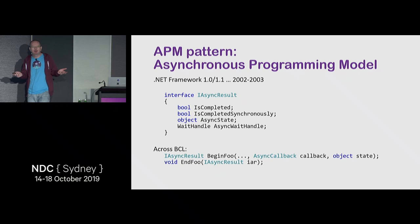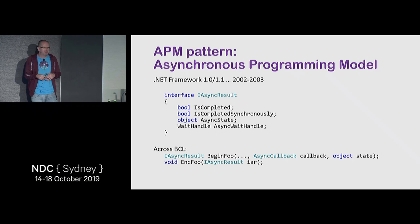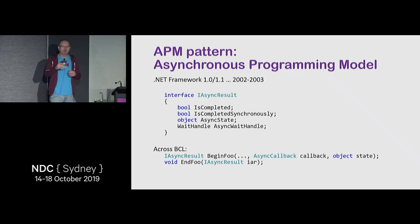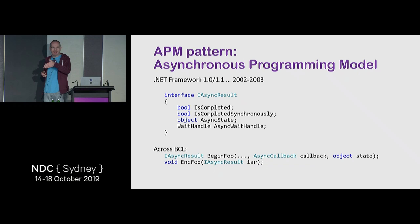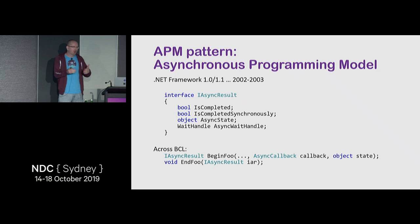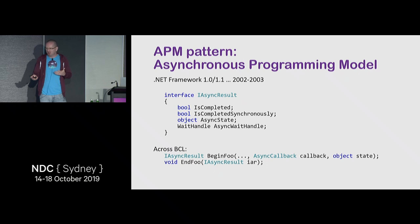The typical function you'd see in BCL was something like BeginFoo, which takes a callback and state, and EndFoo, which takes the IAsyncResult that BeginFoo returned. There were basically two ways to use it: either wait for the callback to call EndFoo inside, or directly call EndFoo and block until the asynchronous operation ended.